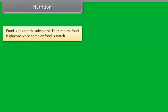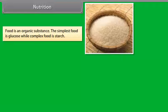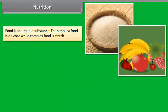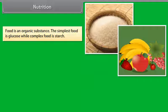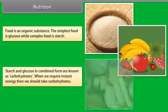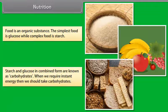Food is an organic substance. The simplest food is glucose, while complex food is starch. Starch and glucose in combined form are known as carbohydrates. When we require instant energy, then we should take carbohydrates.